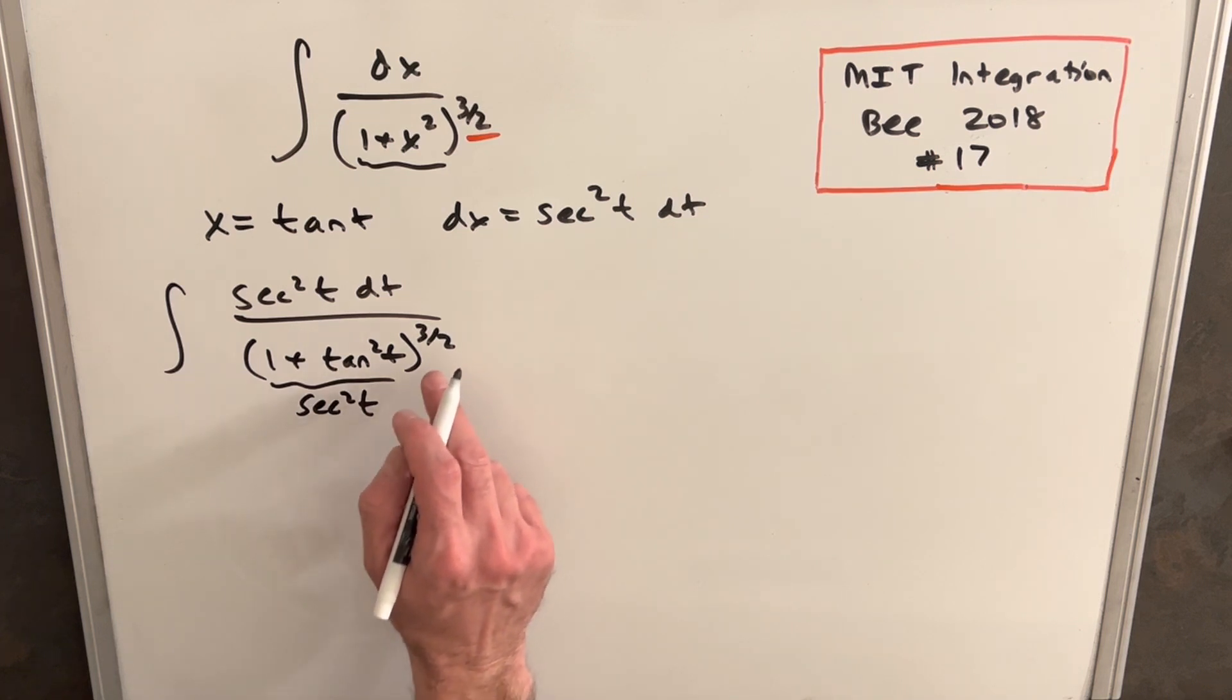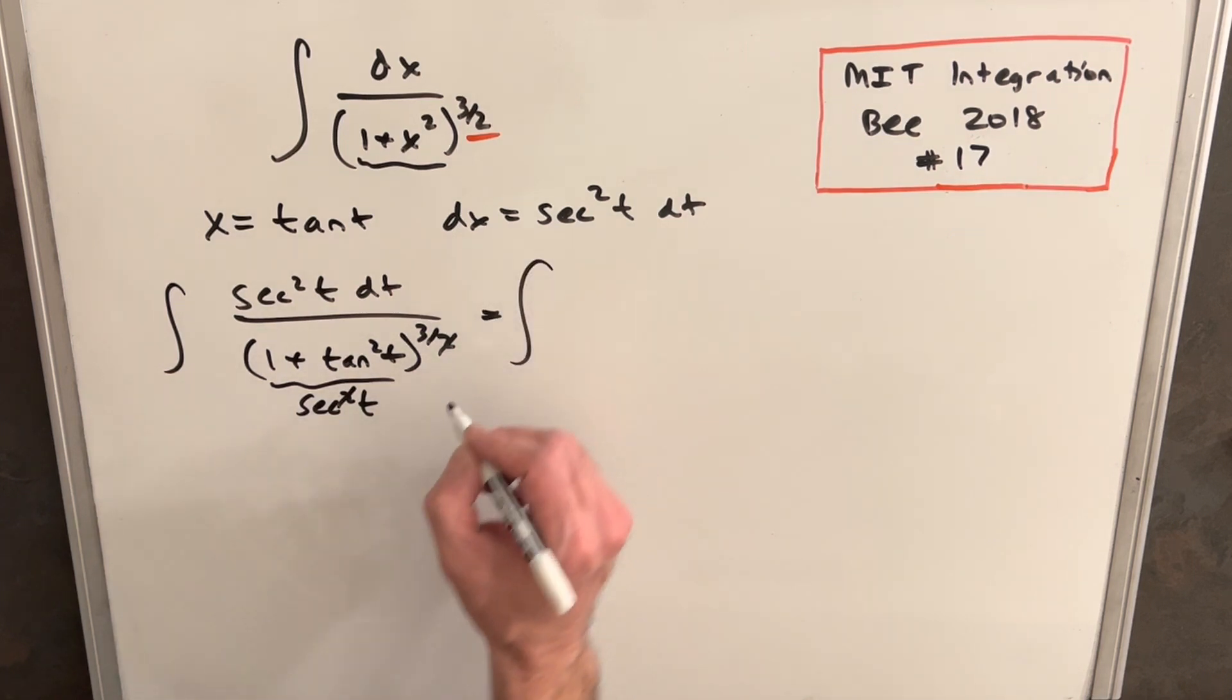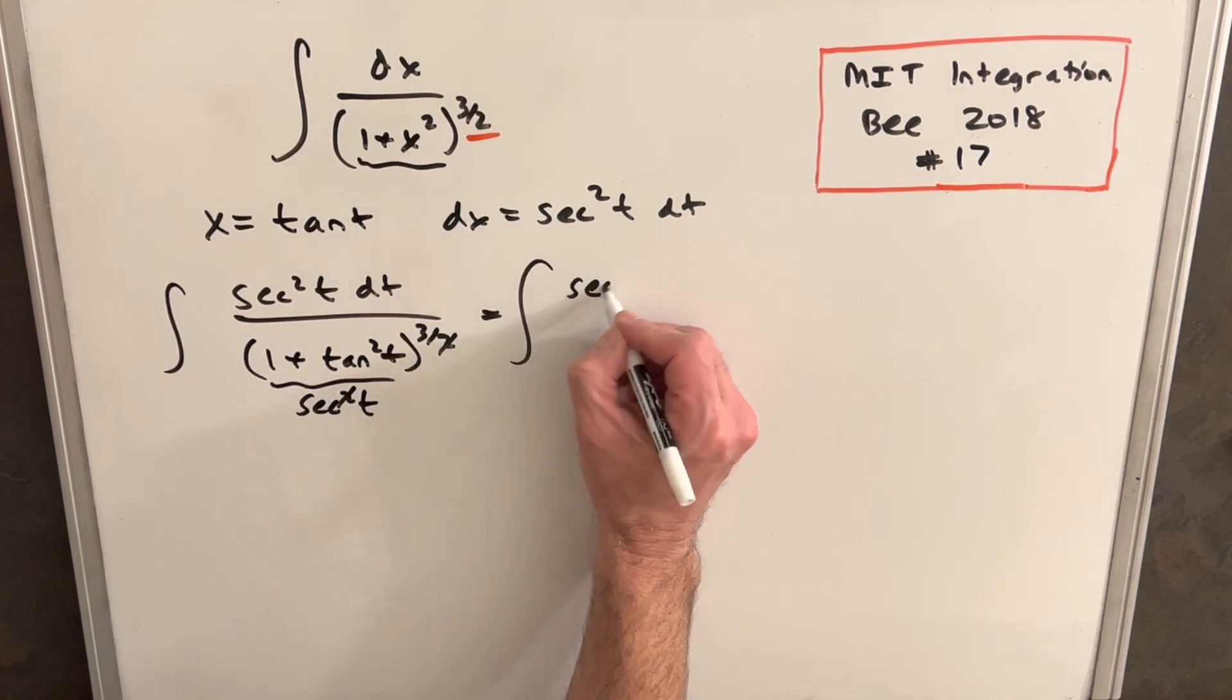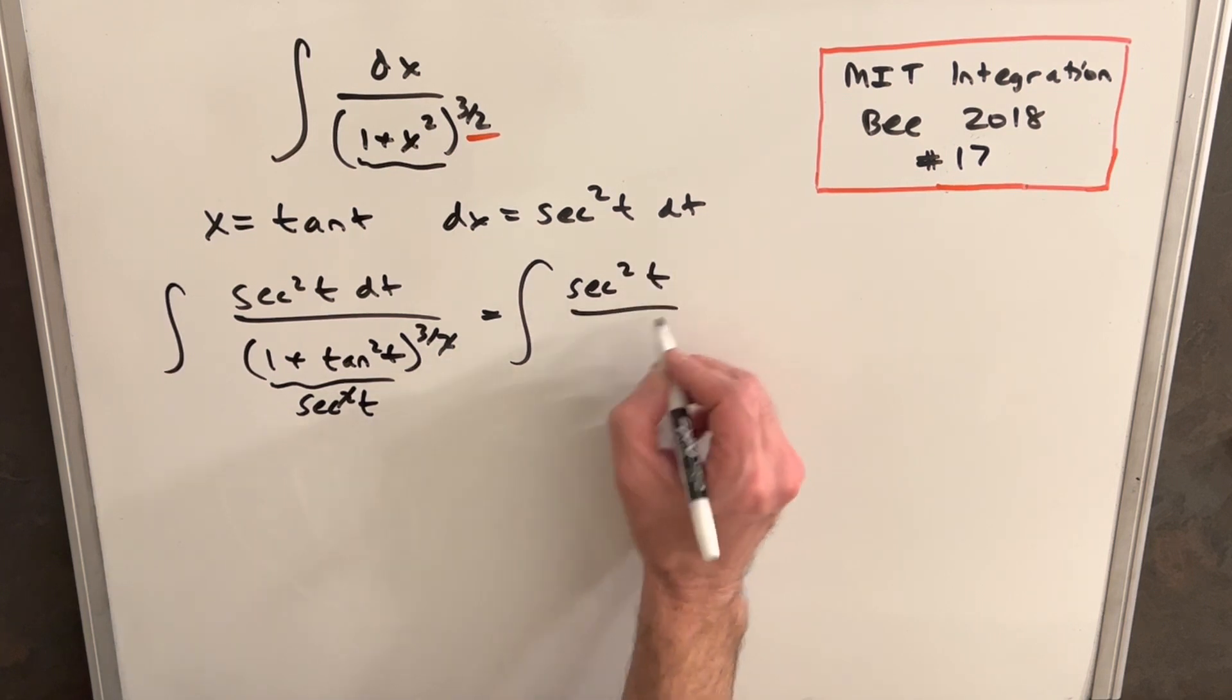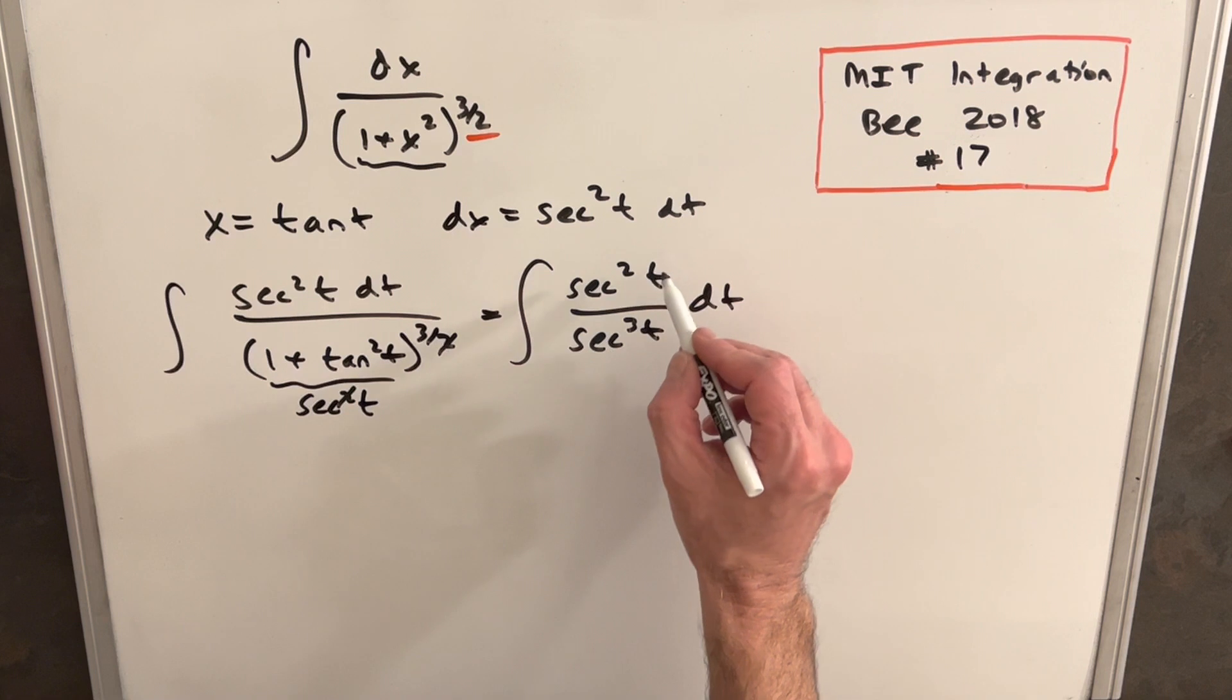Now, secant squared to the three halves, the two is just going to cancel. This is secant to the third. So when we rewrite this, we're going to have secant squared t over secant cubed t. But again, more cancellation.